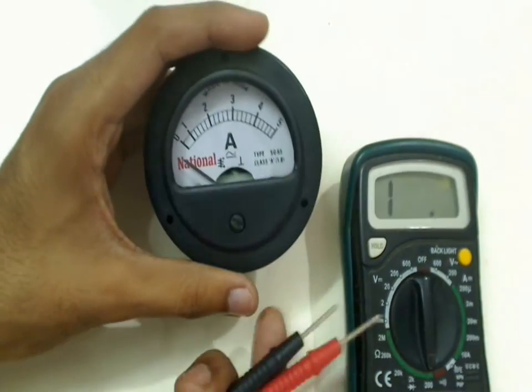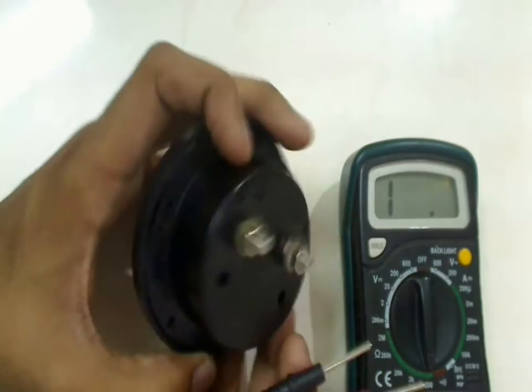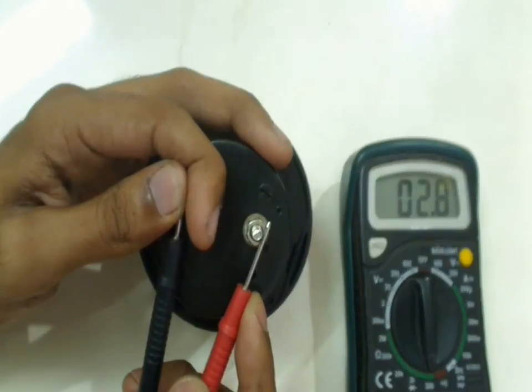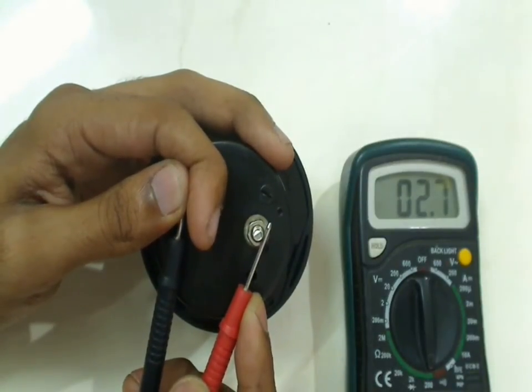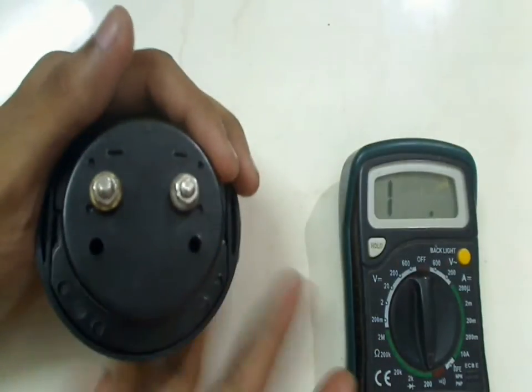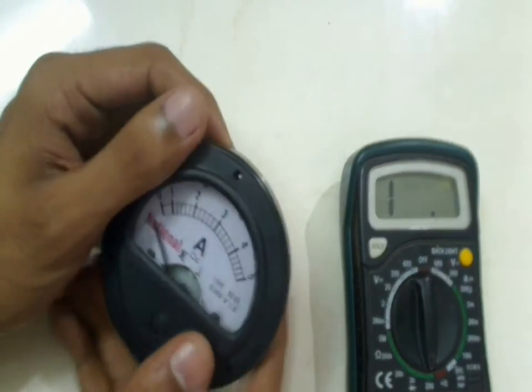Let's measure the resistance of this ammeter using a digital multimeter. So I kept the multimeter in 200 ohms mode. Let's measure the resistance. As you can see it says 2.6 ohms approximately. The resistance is quite low and that is a good sign.